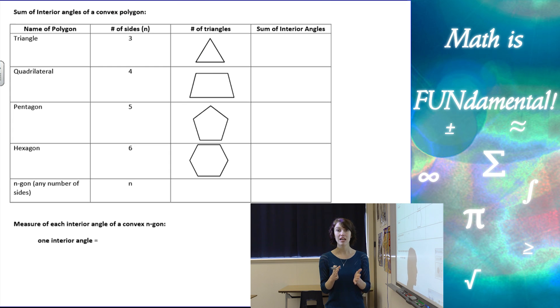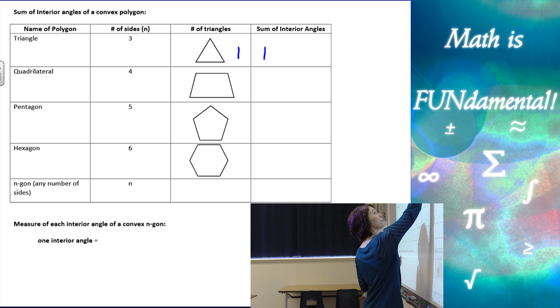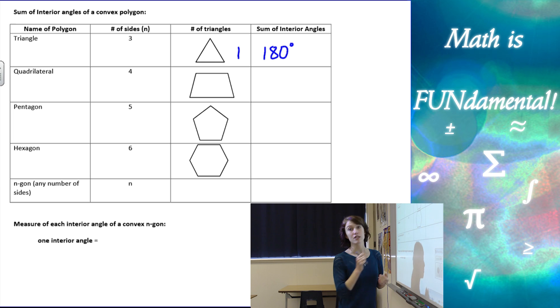Next we're going to look at the sum of the interior angle measurements of a convex polygon. We're going to start with a triangle, which has three sides. The number of triangles in a triangle is one. And the sum of the interior angles, as we've learned in previous chapters, is 180 degrees.